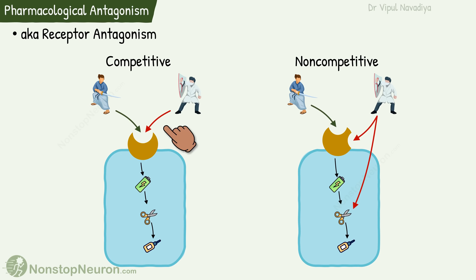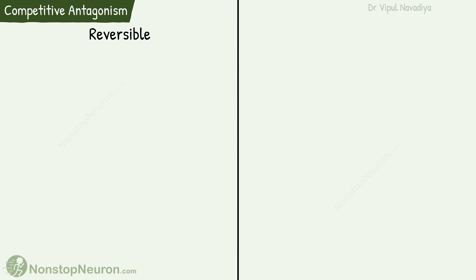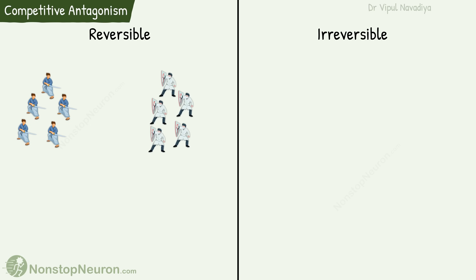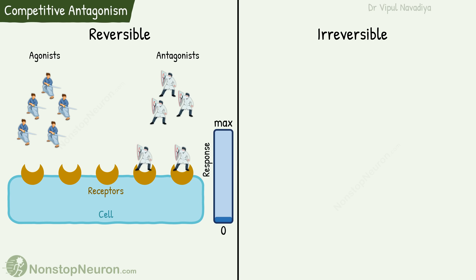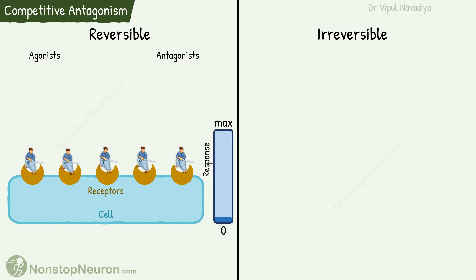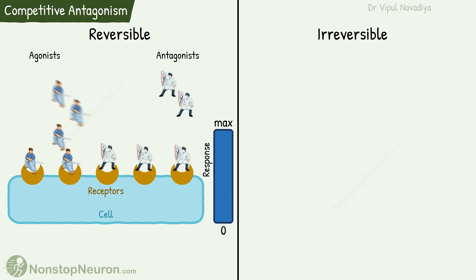Competitive antagonism can be reversible or irreversible. In reversible antagonism, the antagonist makes a weak bond with the receptor, so the binding is reversible. In the absence of antagonists, agonists can occupy all the receptors and produce maximum response. But if an antagonist is present, it competes with the agonist and displaces some of them, decreasing the response.